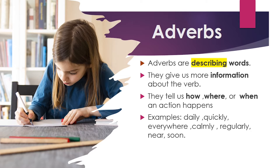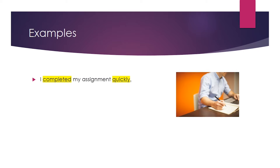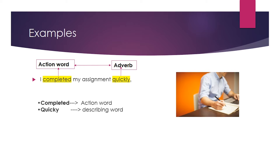For example, there are several adverbs that you use in daily life — daily, quickly, nowhere, calmly, regularly, etc. For example: I completed my assignment quickly. There are two main words — completed and quickly. Completed is the action being performed, and quickly tells at what extent or how the work is completed. So the action word is completed and the adverb is quickly, which gives more information about how the work was done.